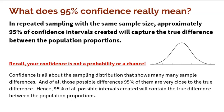A very common level of confidence is 95%. What does 95% confidence really mean? In a nutshell, it means that in repeated sampling with the same sample size, approximately 95% of confidence intervals created will capture the true difference between the population proportions. Make sure you understand that your confidence is not a probability or a chance. It all stems from the sampling distribution — the true difference falls in the middle, and we go down and up by our standard deviation. If we're 95% confident, that means 2.5% at the bottom would be significantly low, 2.5% at the top would be significantly high, and 95% of differences are in the middle.